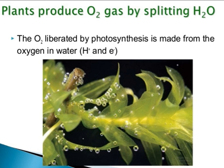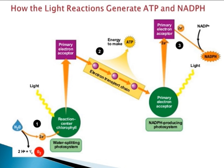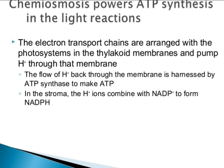O2 is liberated from the splitting of water during photosynthesis. In the light reaction, ATP generation occurs through chemiosmosis: photosystems in the thylakoid membranes pump H+ ions through the membrane into the stroma, where H+ ions combine with NADP+ to form NADPH.